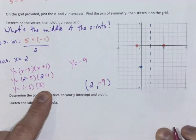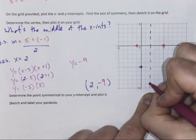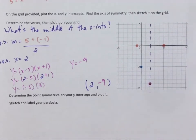So my vertex is 2, negative 9. Because of that, I now have enough points to draw my parabola.